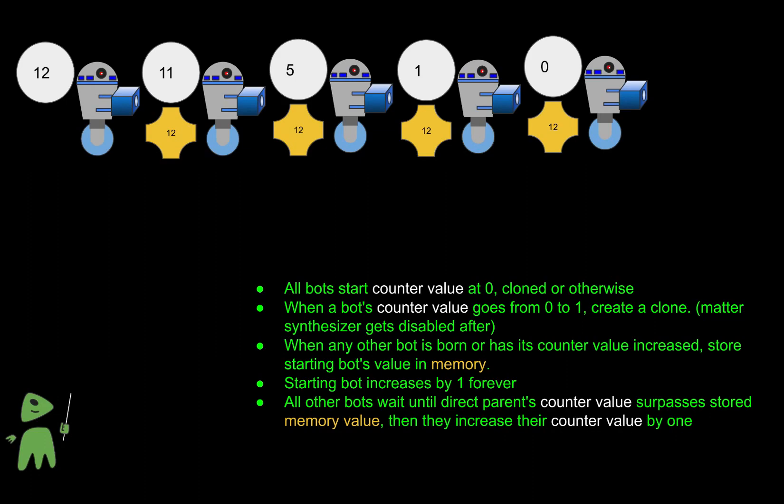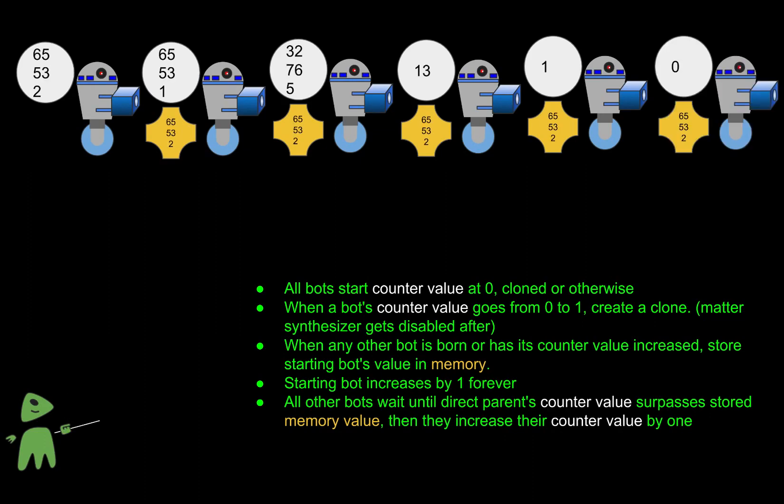We need to wait for it to reach 13 before we get our sixth bot. How many iterations will that take for our starting bot? It turns out this takes a whole 65,532 iterations. What just happened?